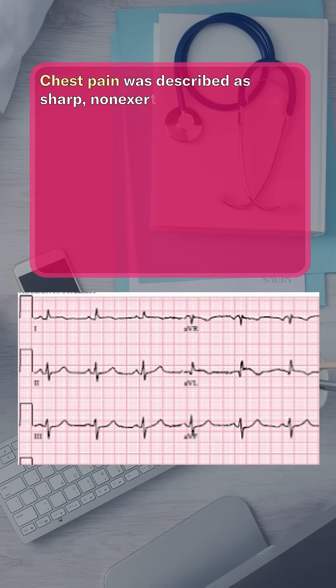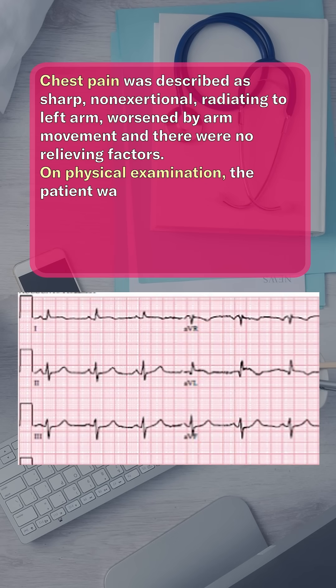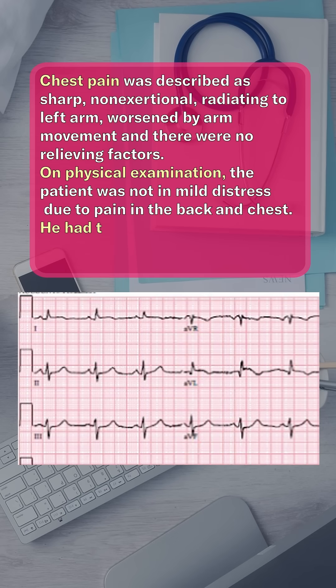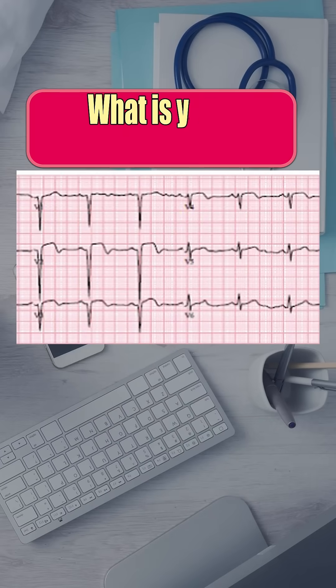The pain is sharp, radiates to the left arm, and worsens with hand movement. On exam, he has tenderness over the chest wall and upper back. So, what would you do next?